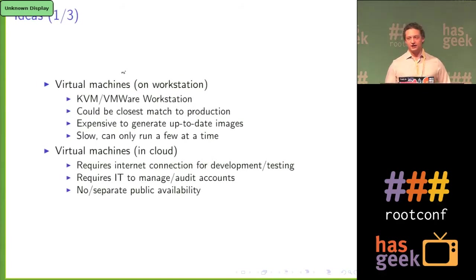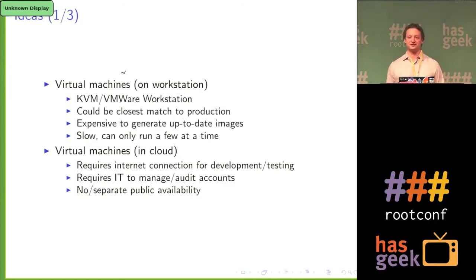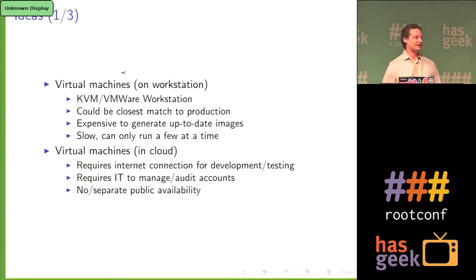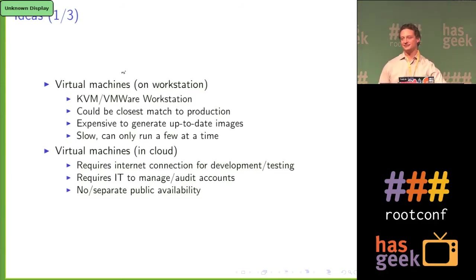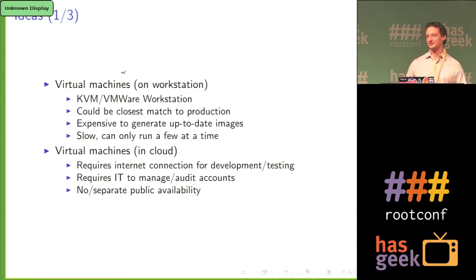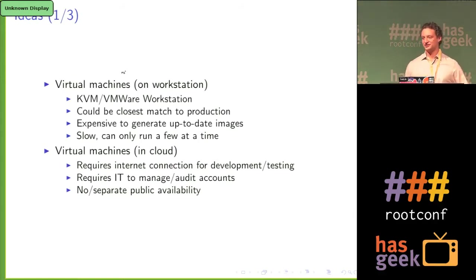We looked at a couple different options. When you think about a development environment that's not your laptop, you automatically go to a virtual machine. We looked at virtual machines on workstations — things like KVM or VMware worked, and they would allow you to match as close to production as possible. But the problem is generating these images and giving them to people is really expensive and takes a lot of time. No one wants to download 800 megabytes to their laptop and set it up every time there's a change. It's slow — you can only run a few at a time, and if you try to start more than two or three virtual machines on your laptop, you'll find it just doesn't scale very well.